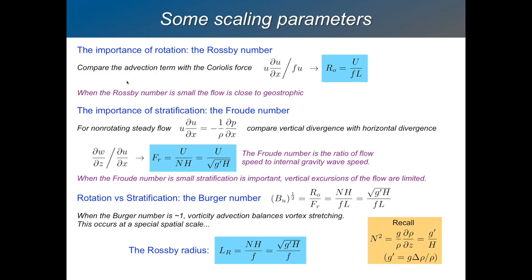The importance of rotation — we compare the advection term with the Coriolis force. A lot of what I do today is a revision, but I think it's a useful revision. So if we compare this steady acceleration term with the Coriolis force, and if you've done the scale analysis, it's the typical wind divided by F times the typical length scale. If rotation is important, then this number will be small. This is called the Rossby number, and if it's small, then the flow is close to geostrophic.